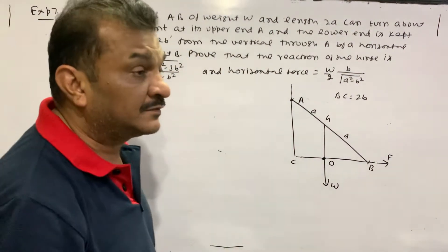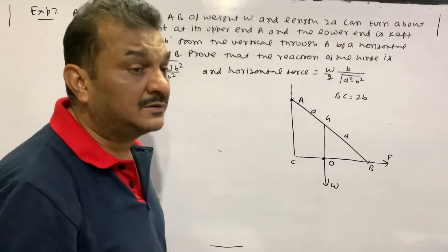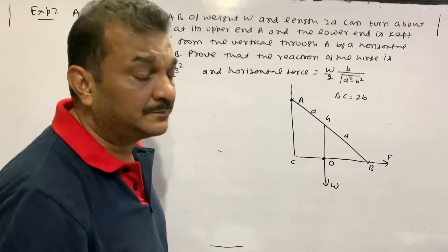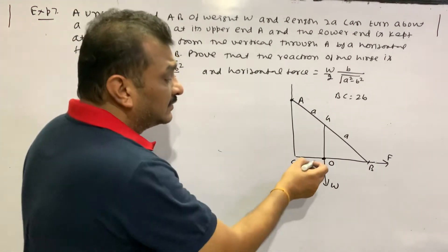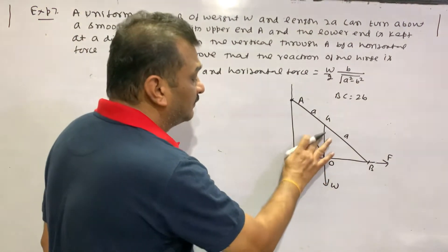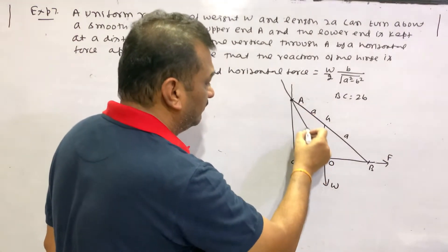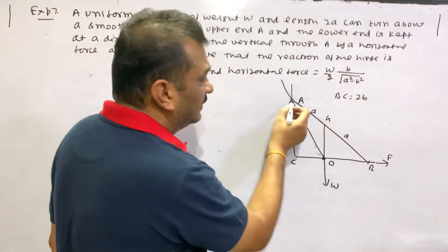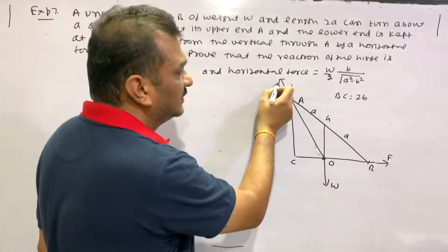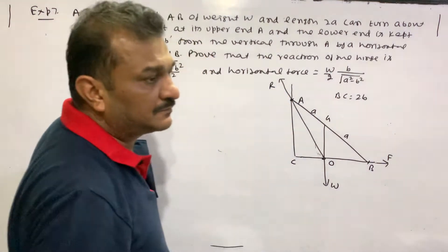Then the system equilibrium will happen. The third force is the self-adjusting reaction force. We attach the weight from A. The third force passes through 1B.